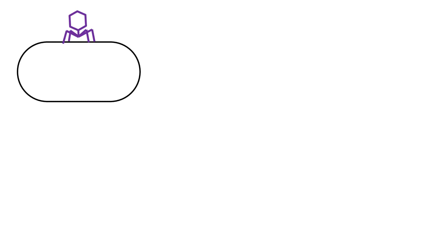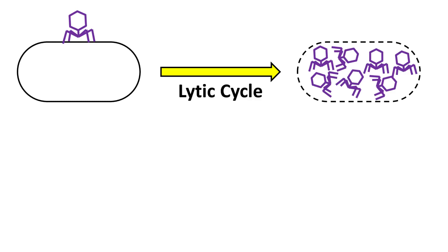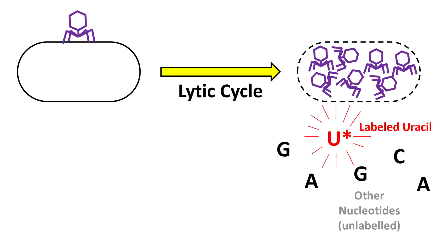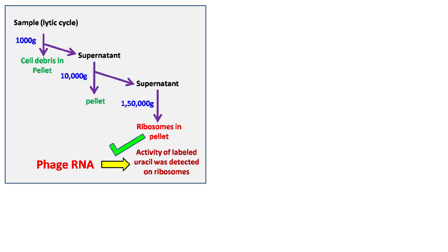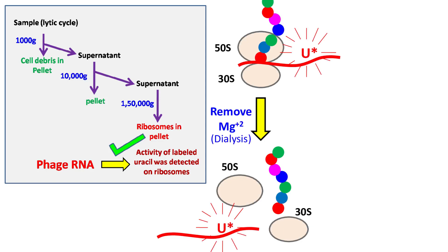So they repeated the same experiment in a prokaryotic system using bacterial cells and bacteriophage. When bacteriophage undergoes the lytic cycle, it takes control over the host metabolism to synthesize new particles. It is during this step that labeled uracil was added to the system. When the lytic cycle was complete, the cells were fractionated by ultracentrifugation and the activity was detected on the ribosome. These ribosomes were then disassociated by lowering the concentration of magnesium ions.